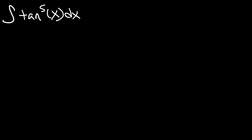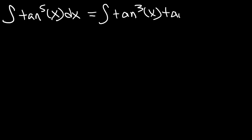When dealing with tangents, it's typically helpful to take out a tangent squared. Since 5 minus 2 is 3, we're going to have tangent cubed times tangent squared. The reason why you want to take out a tangent squared is because tangent squared is part of a trigonometric identity, also known as the Pythagorean identity.